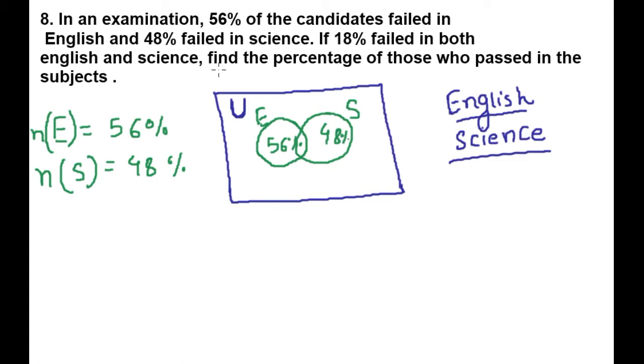Now if 18% failed in both English and science, 18%, it means this common part is 18% and this is E intersection S. Number of students fail in both English and Hindi is 18%.